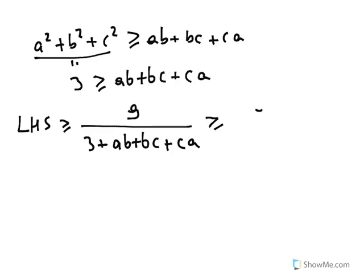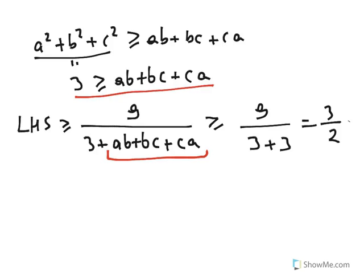Well, that is also greater than 9 divided by 3 plus 3, that is 3/2. Remember, if the value of the denominator increases, the value of the fraction decreases. So ab + bc + ca is less than or equal to 3, so we switch this with 3 and the value of this fraction is less than that.